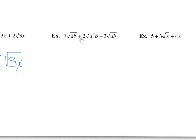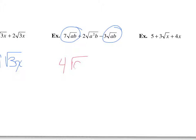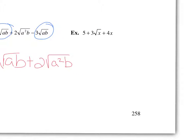In the next example, we have 7 square root of ab, 2 square root of a squared b, and negative 3 square root of ab. The only like radicals are the first and the third, because the middle term has a squared b, so it's different. We can add 7 square root of ab and negative 3 square root of ab to get 4 square root of ab, and the 2 square root of a squared b hangs on at the end. In the last example, there are no like radicals at all — you can't add 4x to 3 square root of x because square root of x is not the same as x, and the 5 has no x at all.